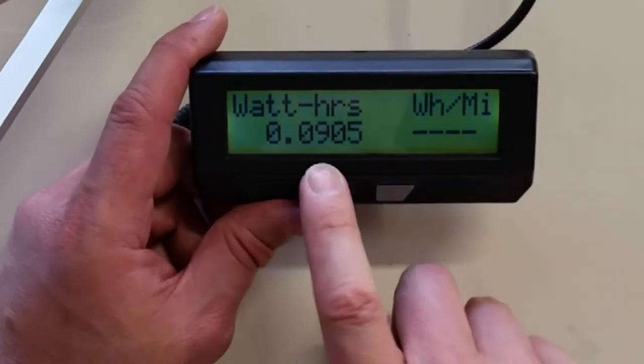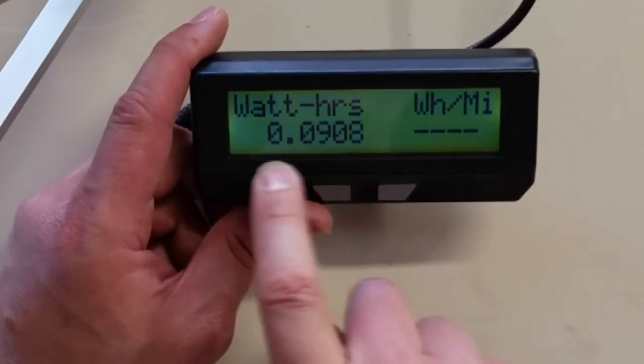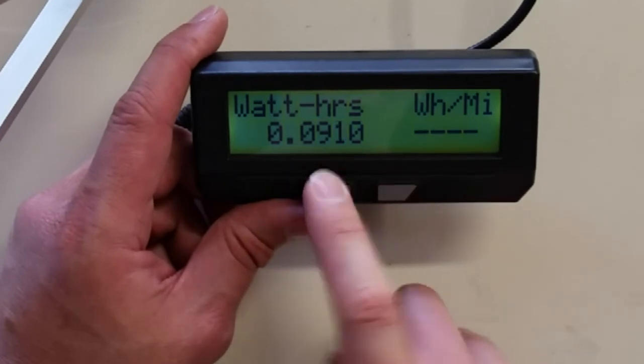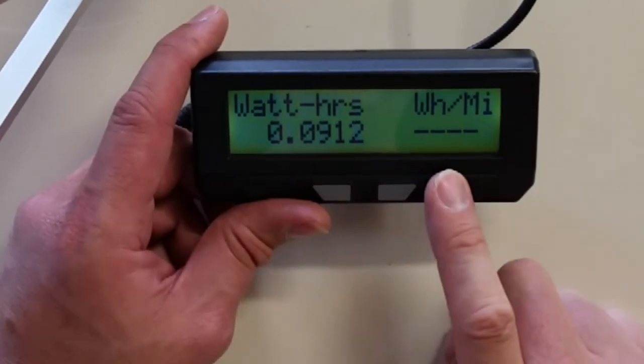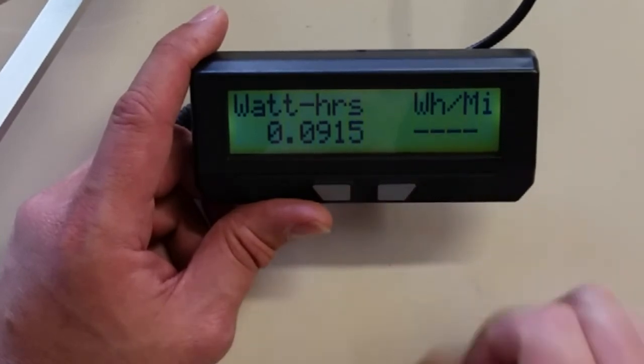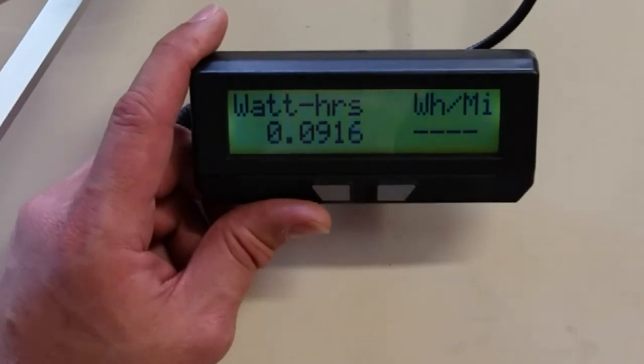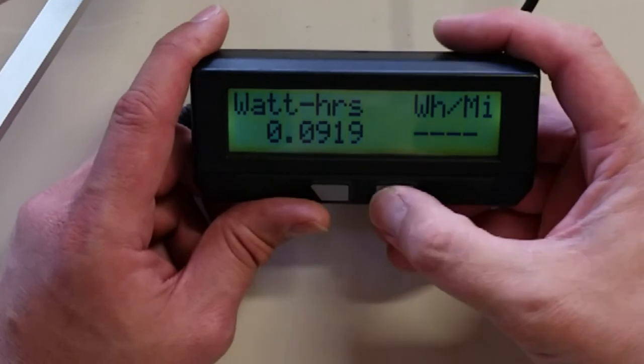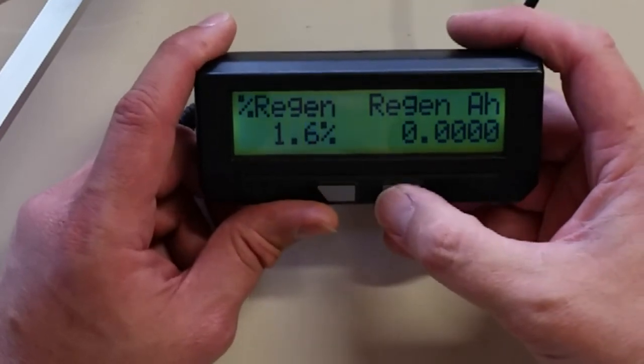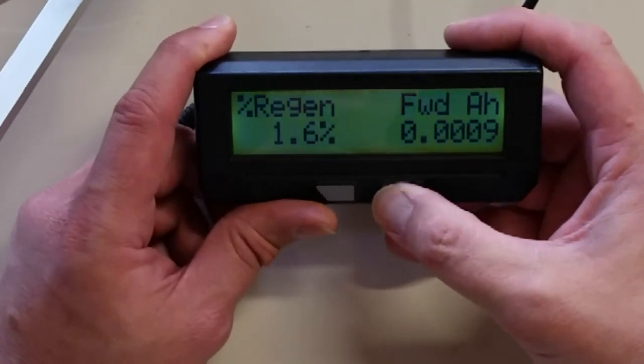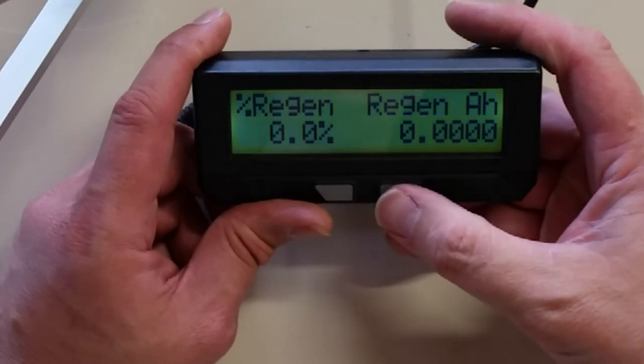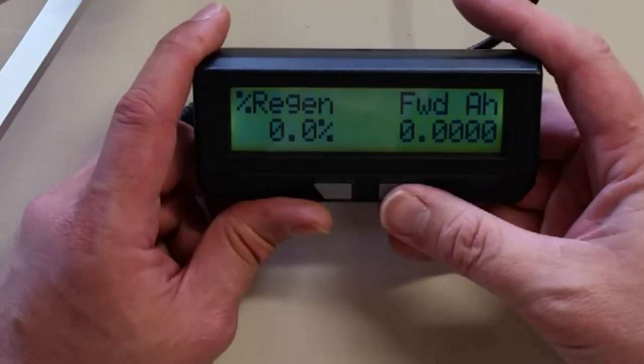Watt hours. You can see just a very tiny amount of watt hours. That's basically what the display is consumed since we've had it turned on. Watt hours per mile just does a quick calculation to tell you if you're riding your bike, how many watt hours you're using per mile, which helps you kind of determine your range if you know how many watt hours your battery is. Percent regen. If you hold down the right button, you'll reset all the statistics here. So we haven't done any regen.